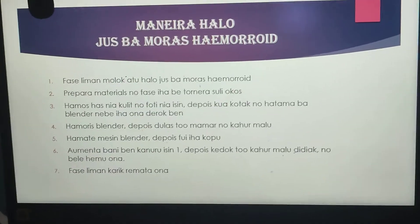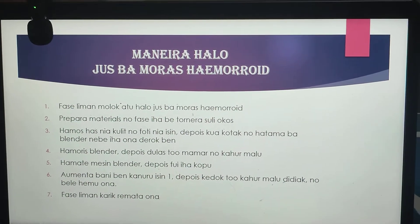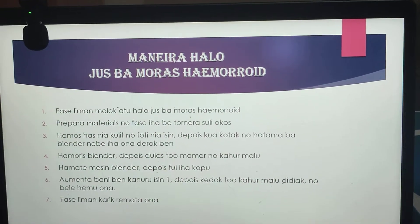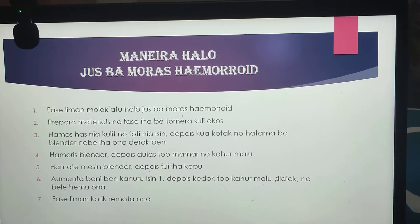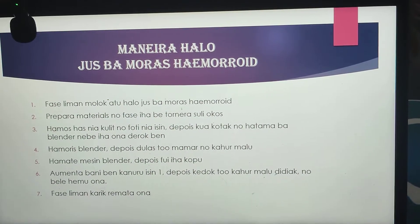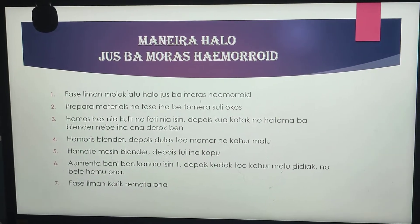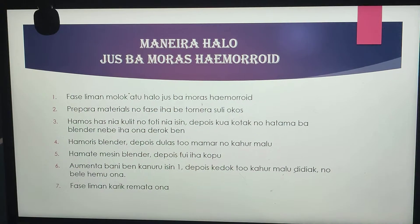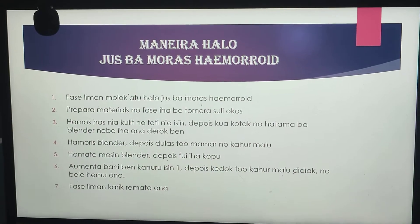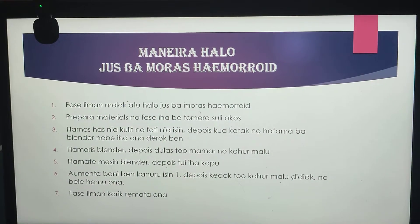We prepare the hemorrhoid juice in phase 5, and then we prepare the material with a toner, when the gel looks like a mixture. When the gel works with liquid, we use a blender, and then add ingredients to the blender with green bowls.